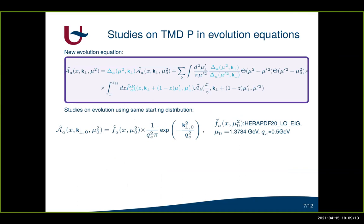We have implemented these two aspects in the parton branching equations and now we want to study this equation and compare its evolution with the normal parton branching method. We perform a study of the evolution by taking the TMD at the starting scale mu_0 to always be the same: a standard PDF with some intrinsic transverse momentum according to a Gaussian function. With this initial distribution always the same, we can easily see the effects of evolution.